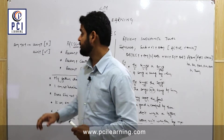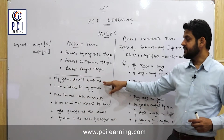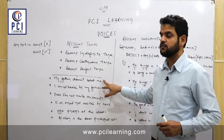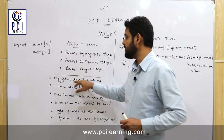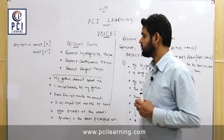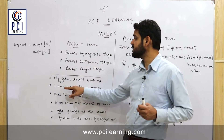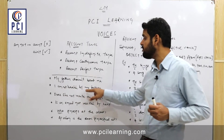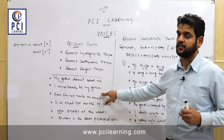Another example: 'My father doesn't beat me.' We use 'doesn't' because 'my father' is singular. The passive voice is: 'I am not beaten by my father.' Here 'me' becomes 'I' as the subject and 'am not' replaces 'doesn't'.